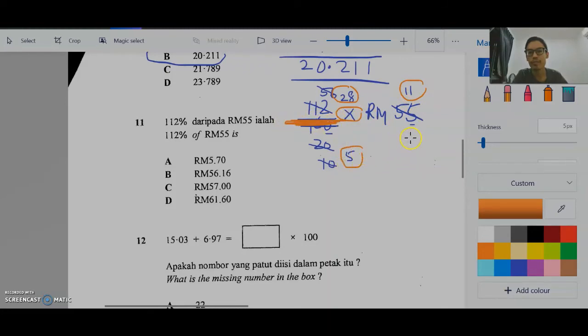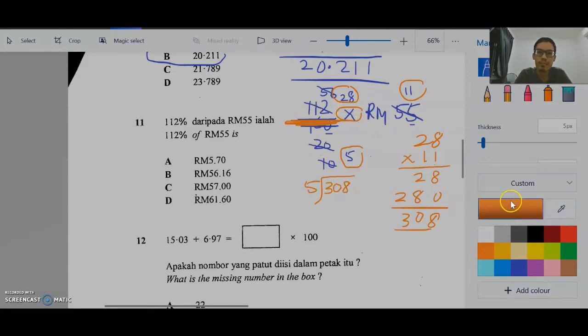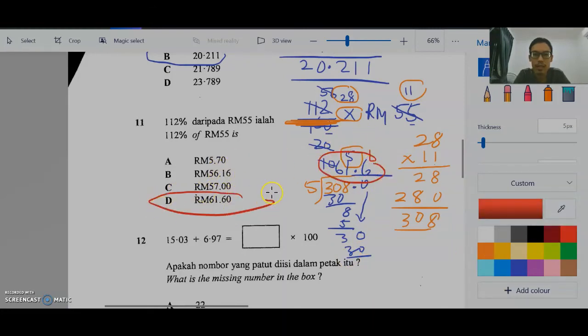28 times 11 divide 5. 1 times 8. 1 times 2. Put a 0. 1 times 8. 1 times 2. 28. And then, divide 5. Balagi lima. 6 times 5, 30. Bring down 8. 1 times 5, 5. Balance 3. This is decimal. You can put 0.0. Bawa turunkan kosong. Desimal. 6 times 5, 30. So, the answer is 61 ringgit and 60 cents.